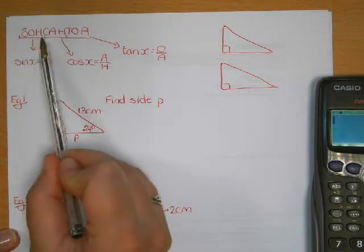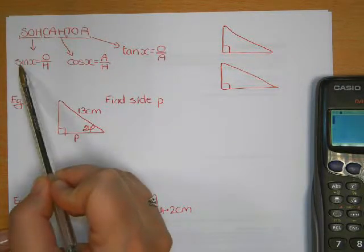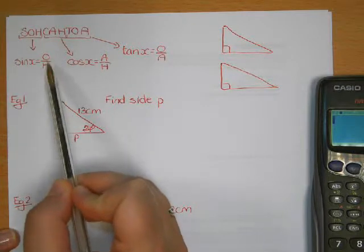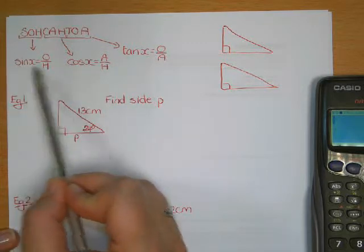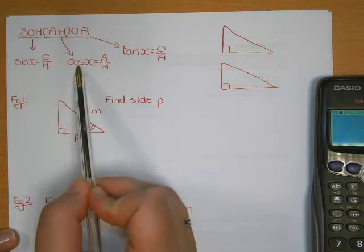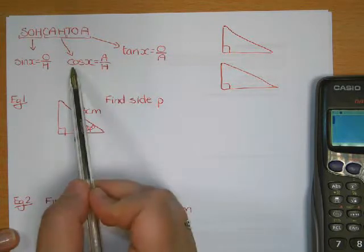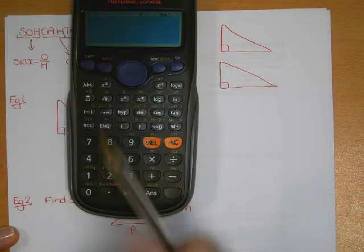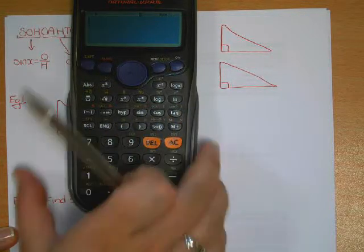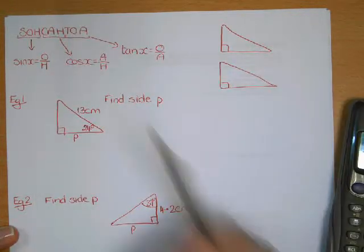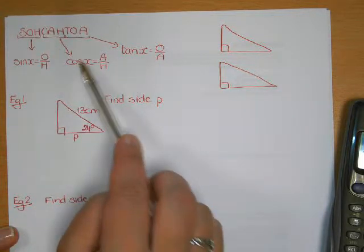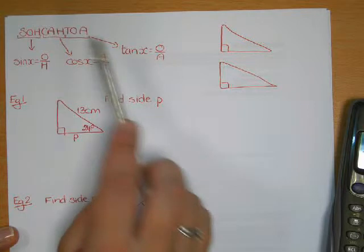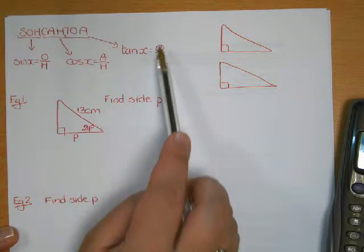SOH stands for sine x equals opposite over hypotenuse. Sine, cos, and tan are three functions — basically things you can do to numbers — and you've got a button on your scientific calculator for each of them. CAH stands for cos x equals adjacent over hypotenuse. TOA stands for tan x equals opposite over adjacent.